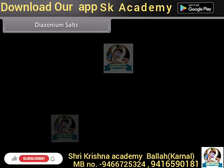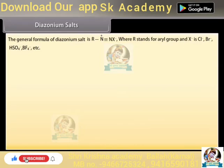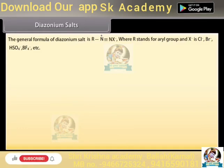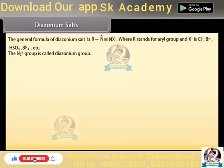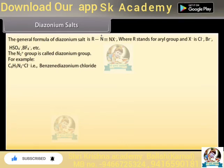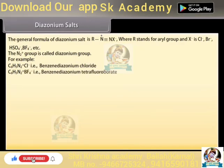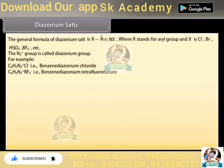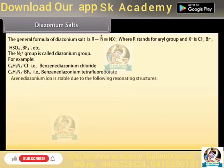Diazonium salts: The general formula of diazonium salts is RN2⁺X⁻, where R stands for an aryl group and X⁻ is chloride ion, bromide ion, hydrogen sulfate ion, or tetrafluoroborate ion. The N2⁺ group is called the diazonium group. For example, C₆H₅N₂⁺Cl⁻ is benzene diazonium chloride and C₆H₅N₂⁺BF₄⁻ is benzene diazonium tetrafluoroborate. The arene diazonium ion is stable due to resonating structures.